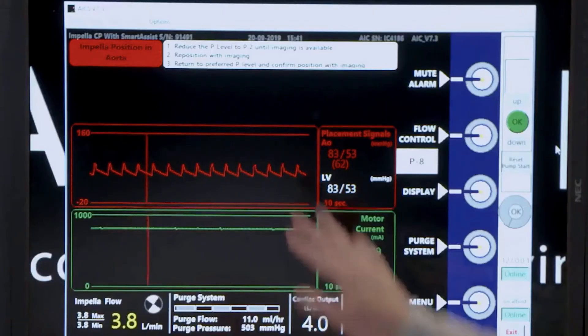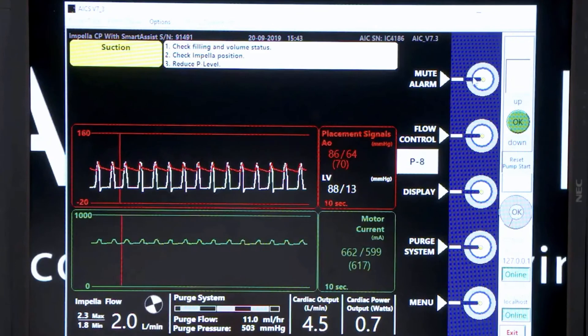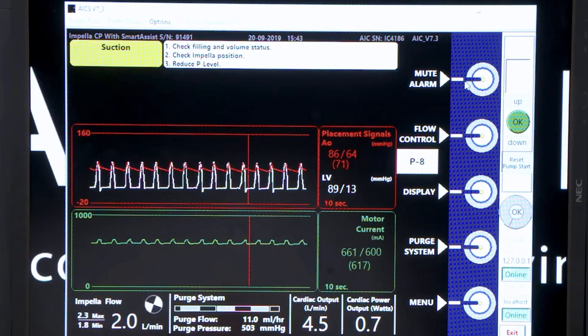The red alarm means that the pump is not functioning to support the patient, like your pump position wrong alarms. Your yellow alarm means that the pump is functioning, just not adequately supporting the patient. This is going to be more like a suction alarm.